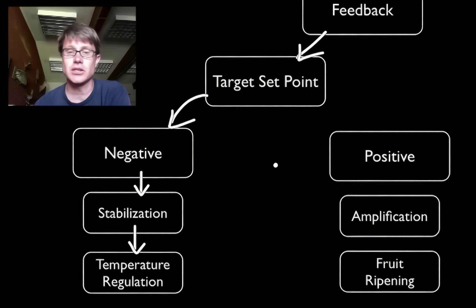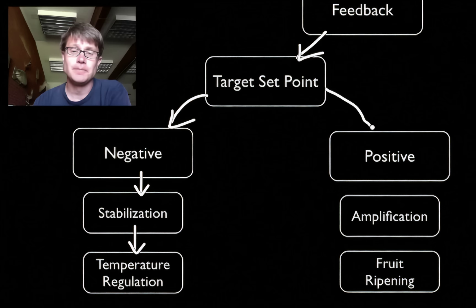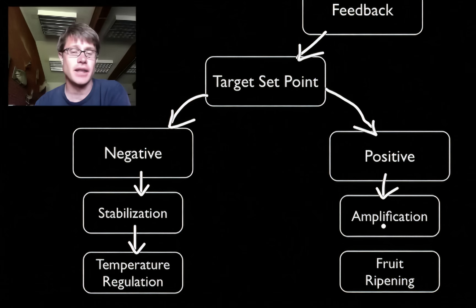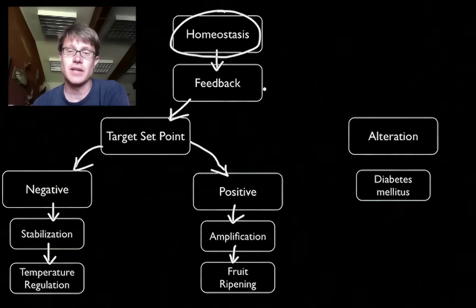So you're as close to that as you possibly can be. Example I'll give you is temperature regulation in mammals. In a positive feedback loop you move away from that target set point. So you amplify that. Example I'll give you is fruit ripening. Why all the apples on a tree seem to ripen at the same exact time.